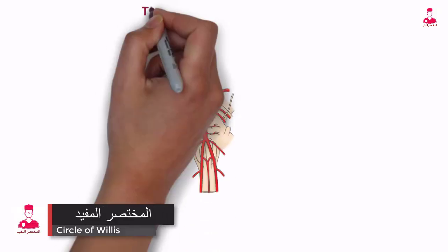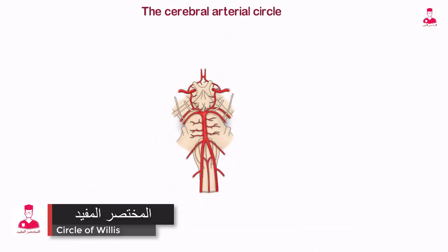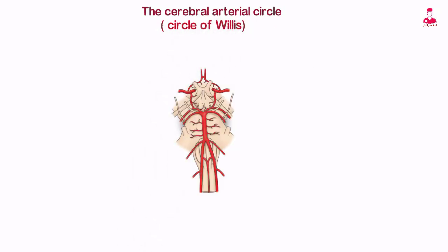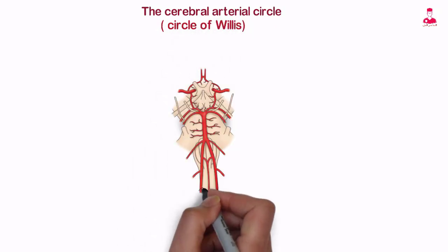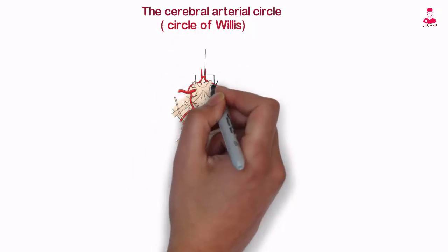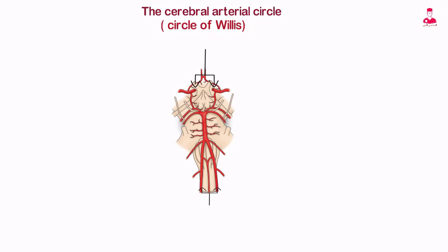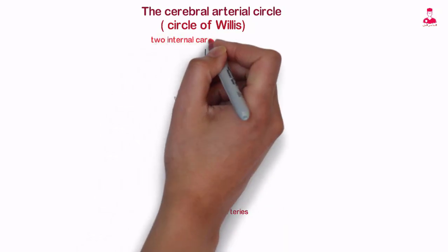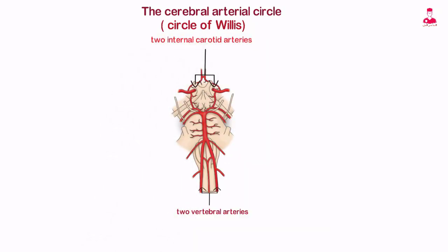The cerebral arterial circle, or circle of Willis, is a critically important anastomosis among the four major arteries — two vertebral and two internal carotid — feeding the brain.